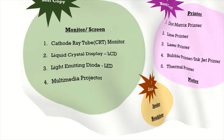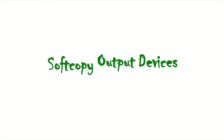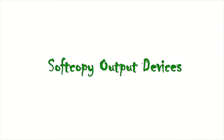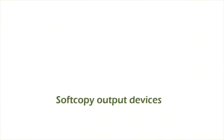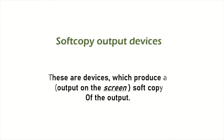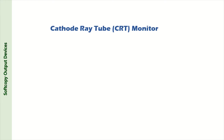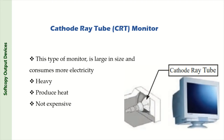Soft copy output devices are devices which produce an output on the screen, or a soft copy of the output. Cathode ray tube monitor: this type of monitor is large in size, consumes more electricity, is heavy, and produces heat.